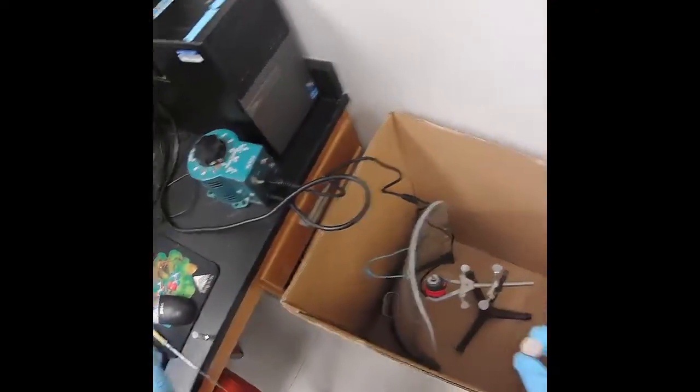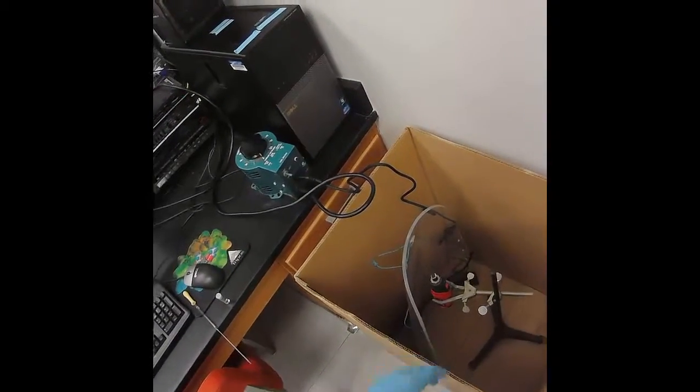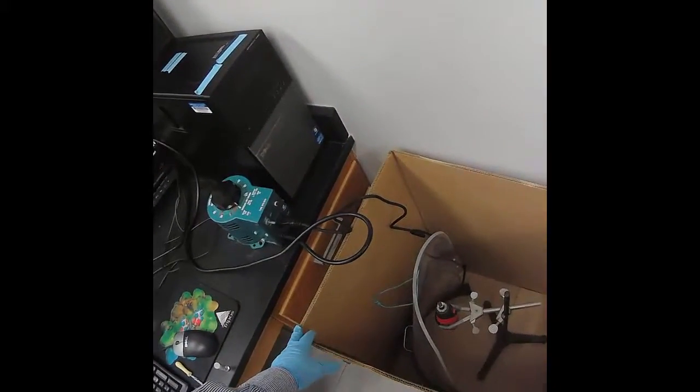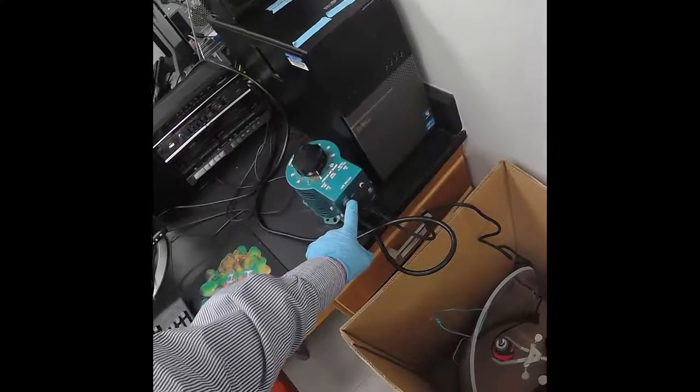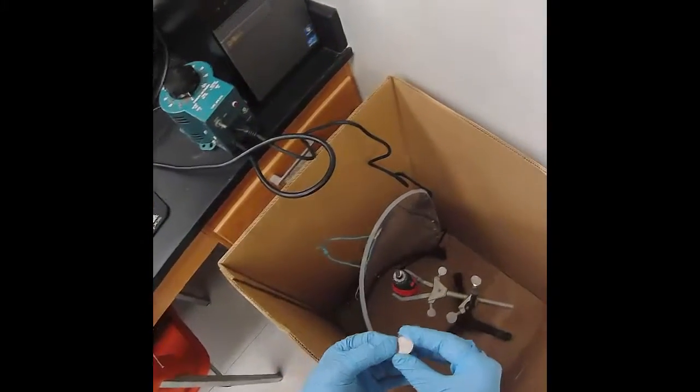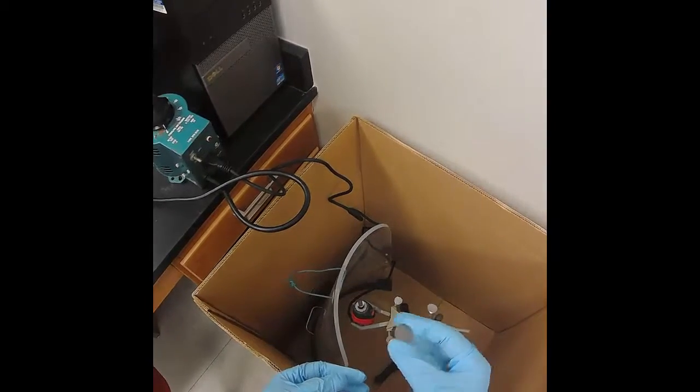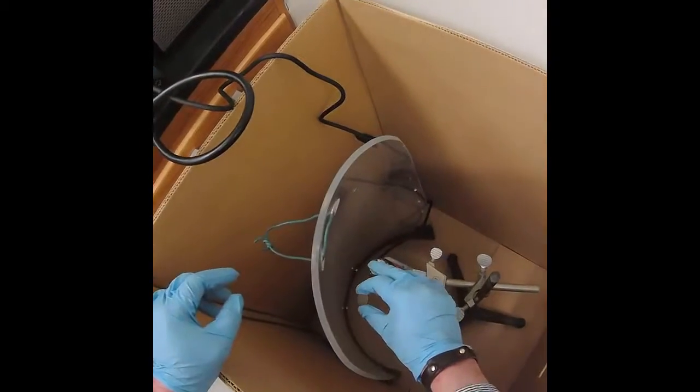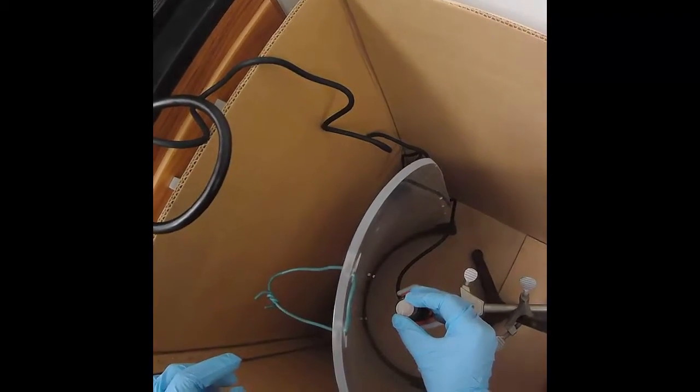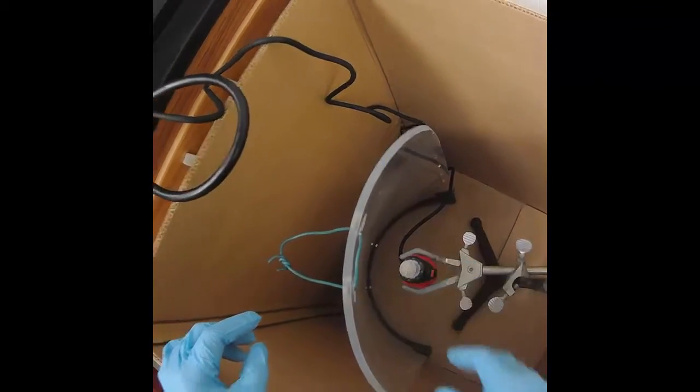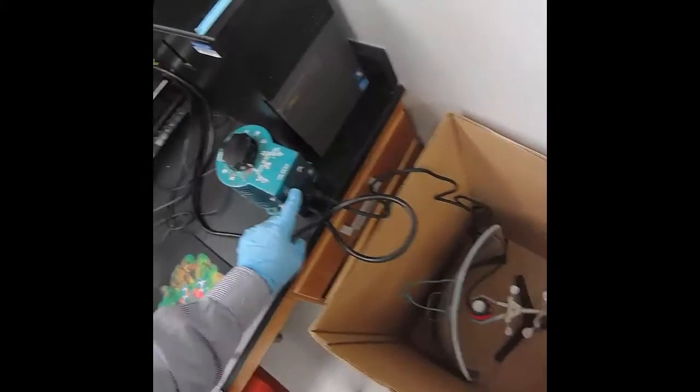Our homemade spin caster consists of a Dremel tool mounted in this box. The speed is going to be controlled by the variac. So first we're going to center our sample holder, the steel, onto this magnet so that it will spin evenly when we turn on the Dremel tool.